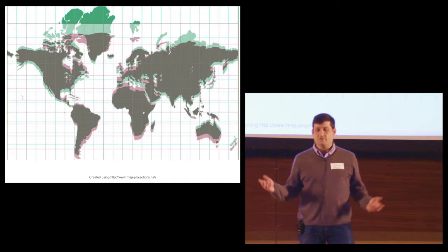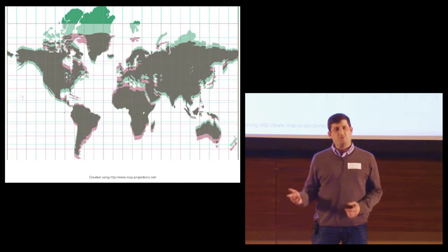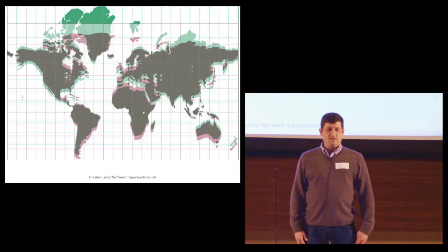Here we see the Mercator projection, the projection everyone loves to hate, and the Peters projection, overlaid. The red and green is where they disagree.